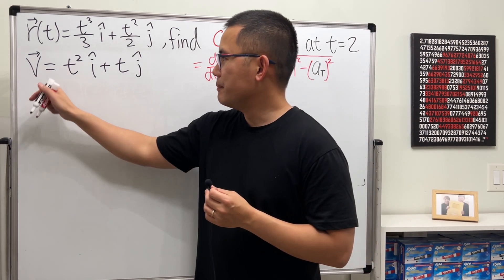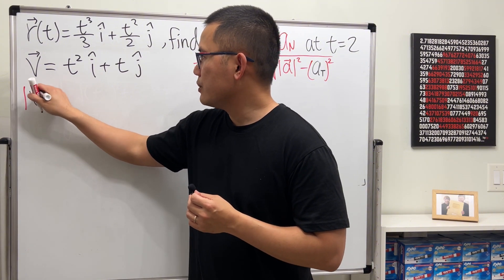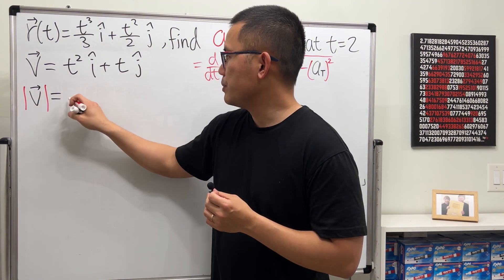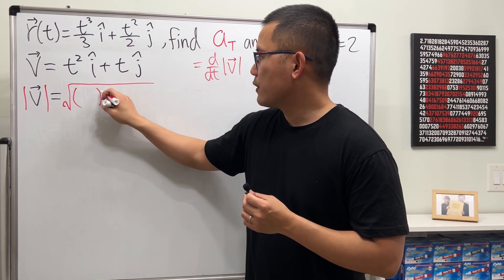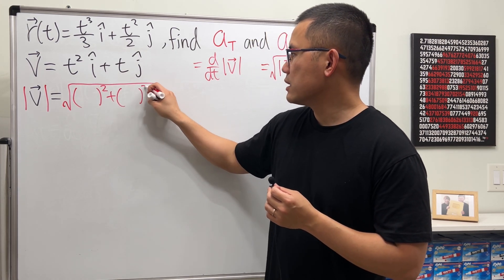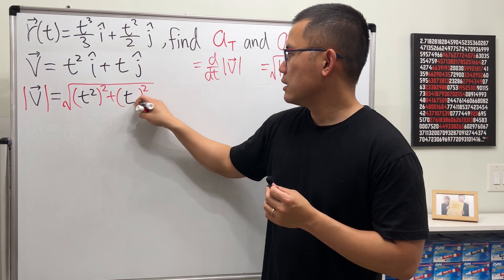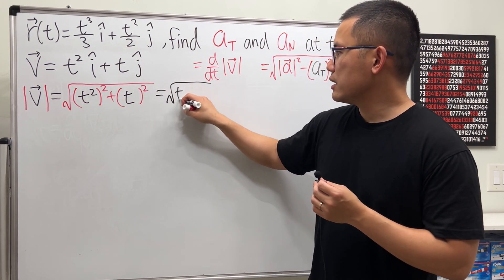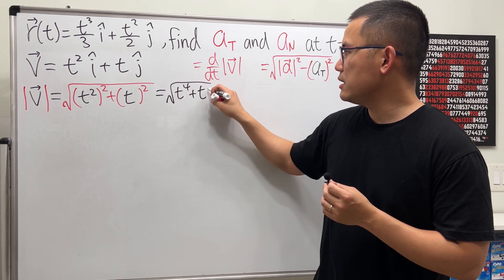Next, we need the magnitude of the velocity. The magnitude is just the square root of the first component squared added to the second component squared. So that is the square root of t⁴ plus t².